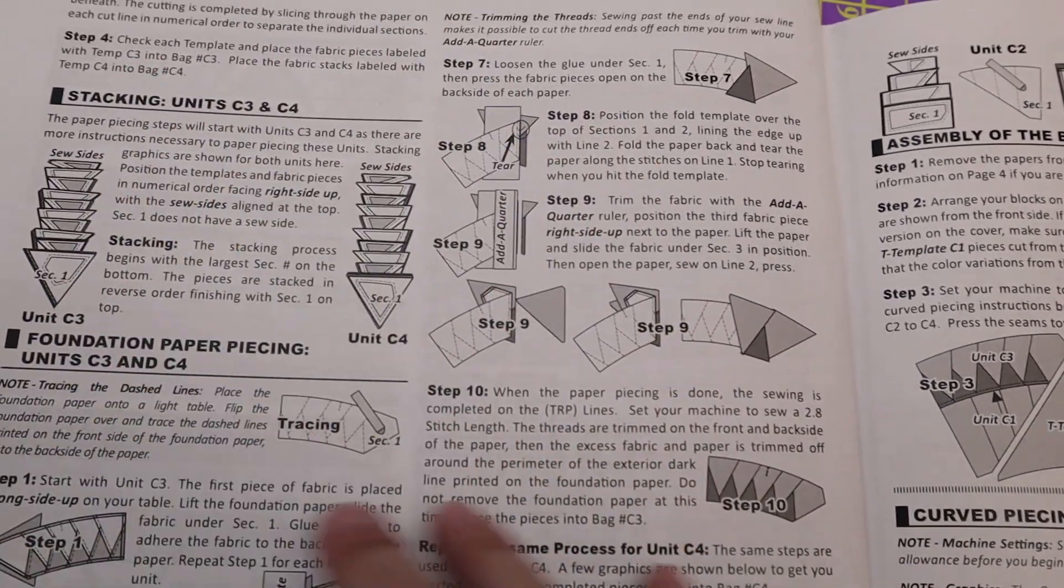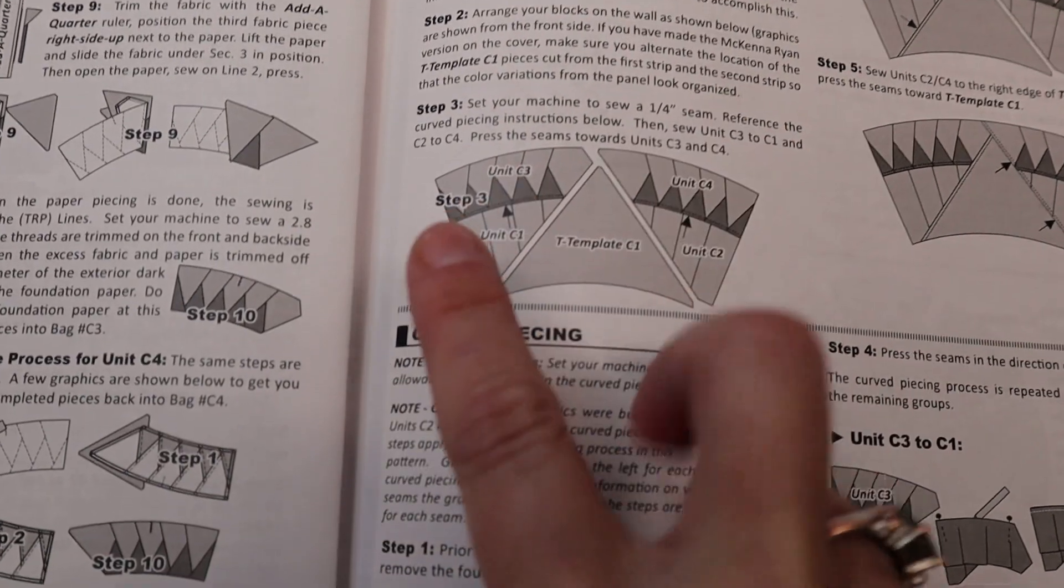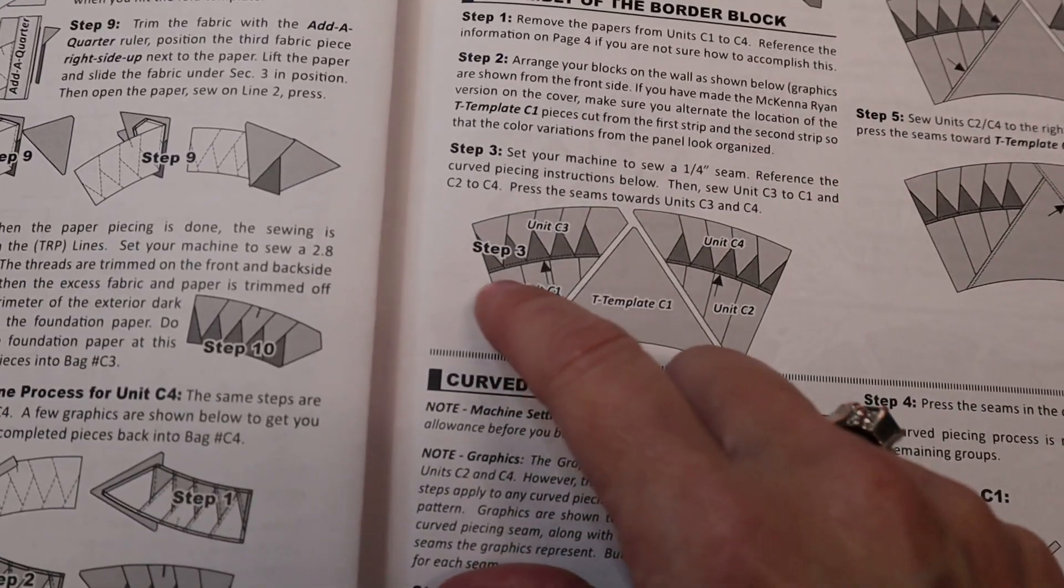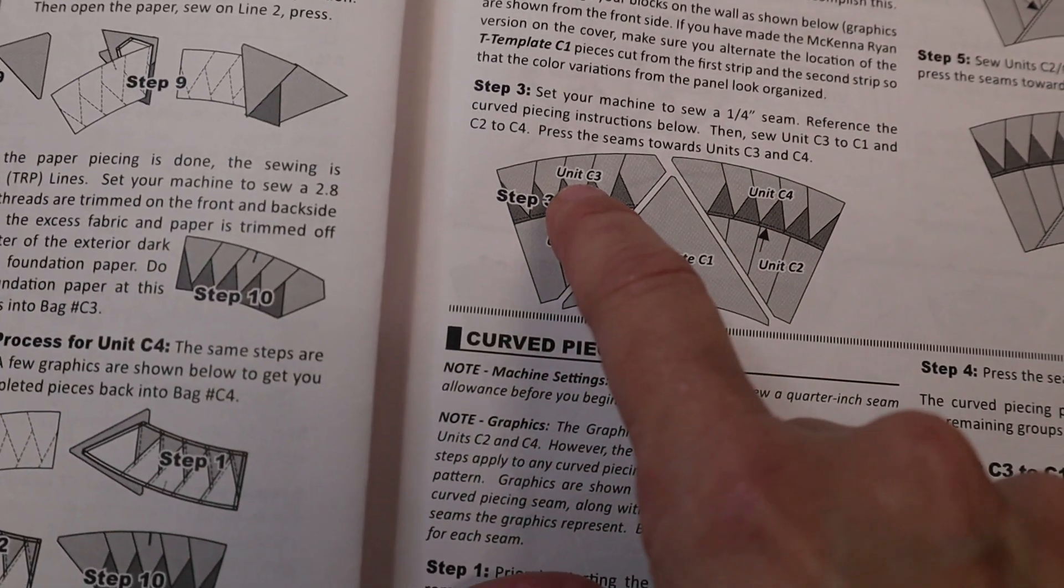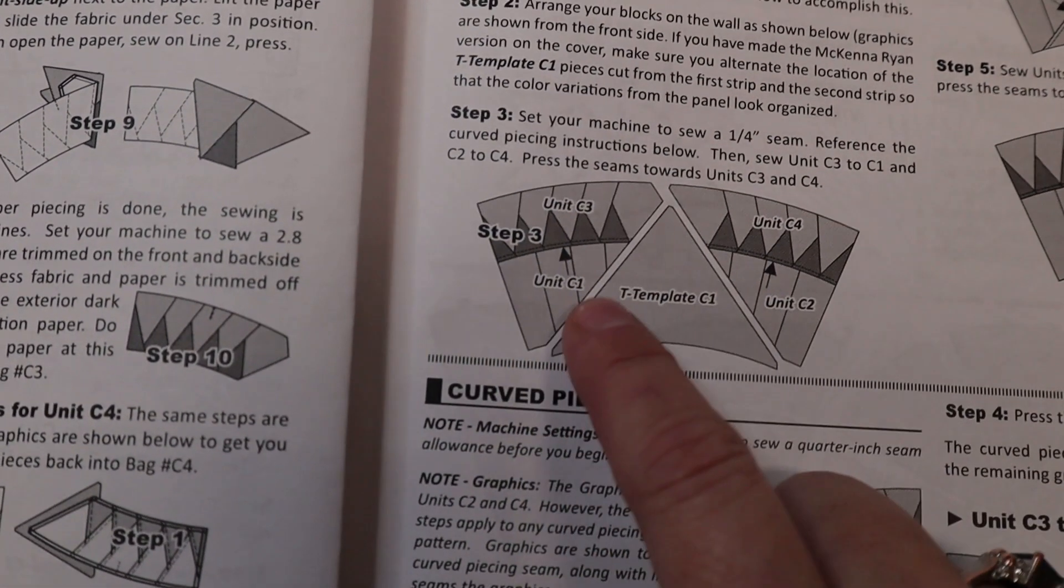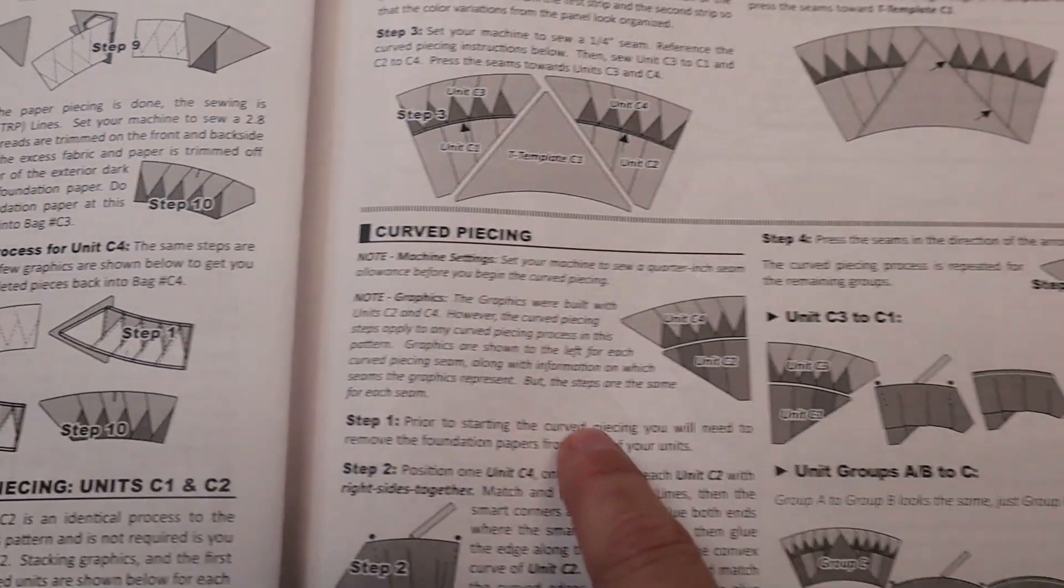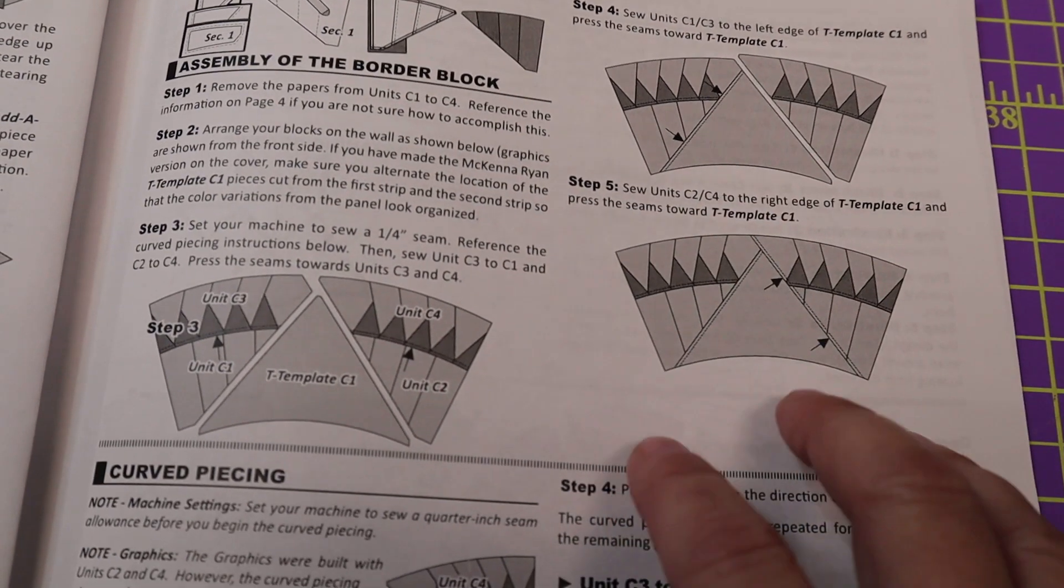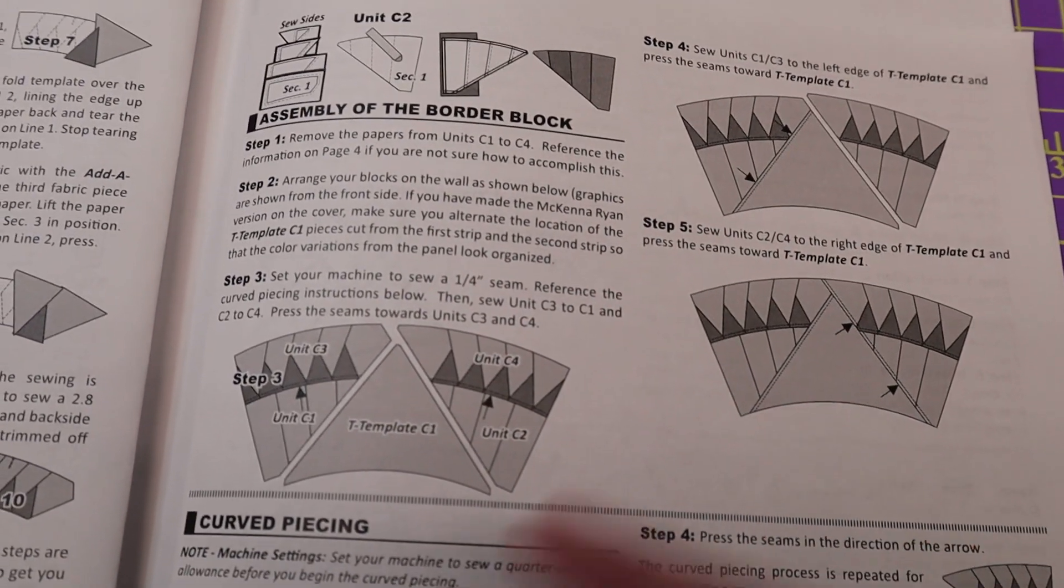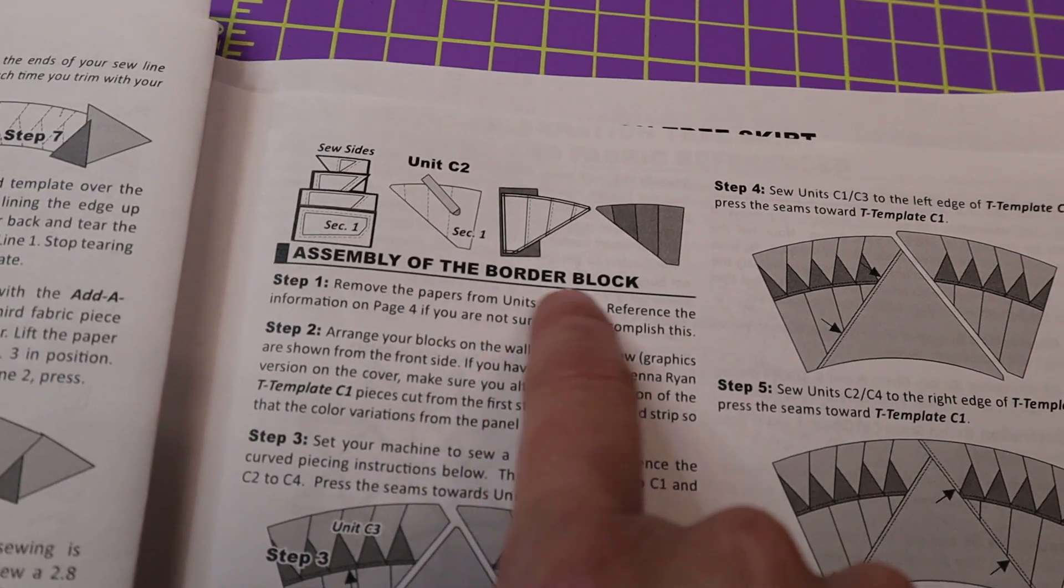So that's the last part of each chapter. Then if there's multiple parts in a chapter, like for instance, this chapter, there were actually four blocks. It's going to show you how to assemble those. So like, for instance, this one has a C1 and a C2, a unit C3 and a unit C4. So it's going to show you how to assemble those two units and those two units. And then here is your pressing diagram. So you want to press your seams in the direction of the arrow. So that will give you a little bit of assembly information for these particular blocks. And that's out of one chapter. And there are some chapters where it's just going to be one unit. And there'll be other chapters where you'll have multiple units like this. And at the very end, it will tell you assembly of that particular block.